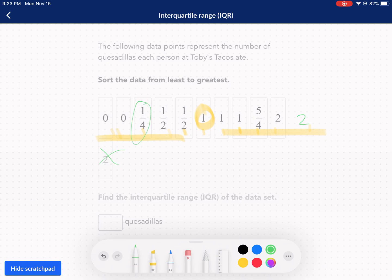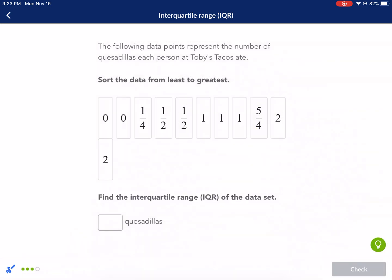I find the median. Both those. That's there. That's there. And I subtract five over four, one over four equals four over four. And that is equal to one.